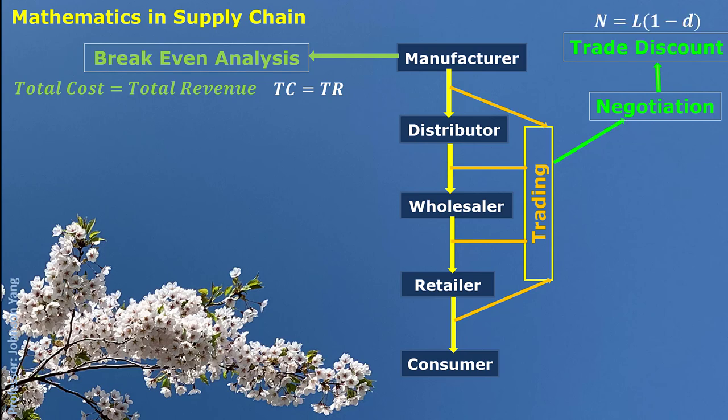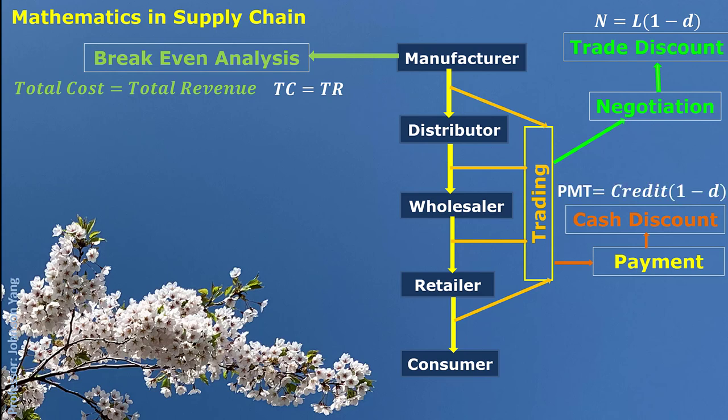After the trading deal is settled, there is a period for payment to be made. During this period, some kind of discount could be offered to encourage the buyer to pay the money as soon as possible. This part is called the cash discount.